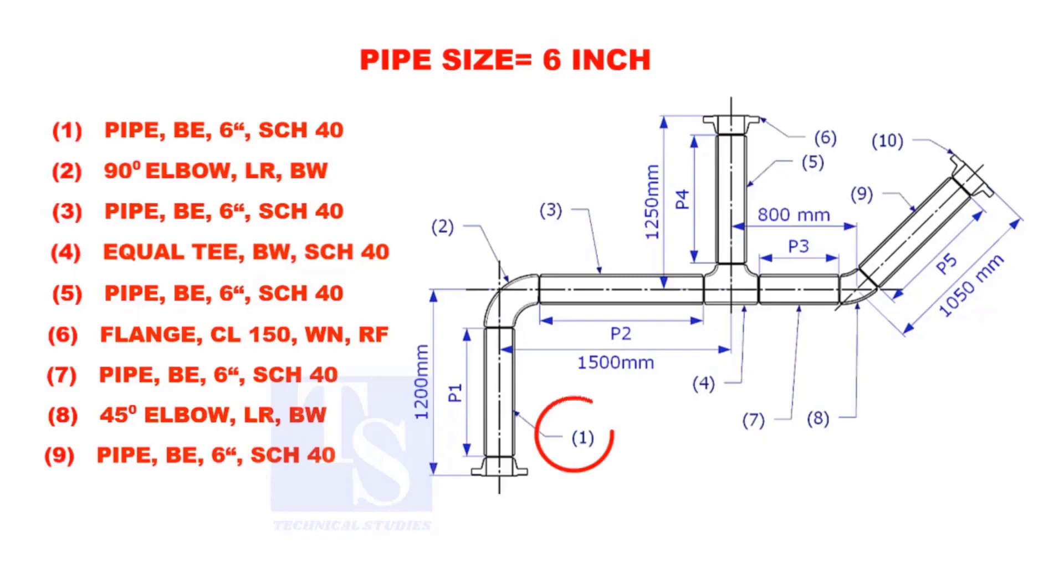Let us calculate the length of pipe 1. To calculate the length of pipe 1, we need to reduce the flange height and the elbow center from the measurement 1200mm.